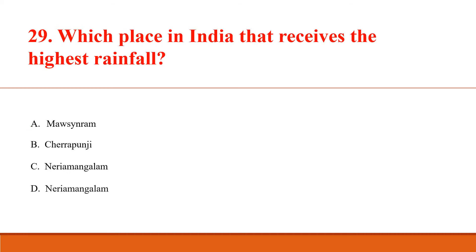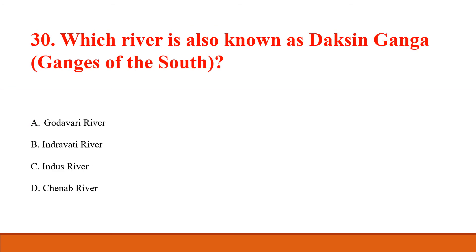Which place in India receives the highest rainfall? Answer A: Mawsynram. Mawsynram is a town in the East Khasi Hills district of Meghalaya. Which river is also known as Dakshin Ganga (Ganga of the South)? Answer A: Godavari river.